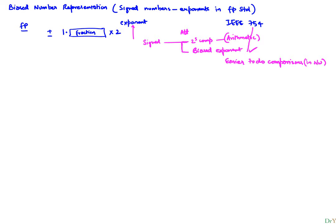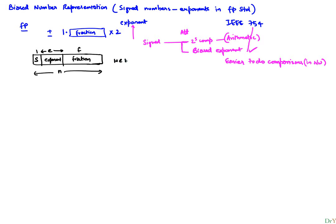When we represent a floating-point number as an n-bit number, we use one bit for the sign, some number of bits e for the exponent, and the rest for the fraction. So one plus e plus f equals n.